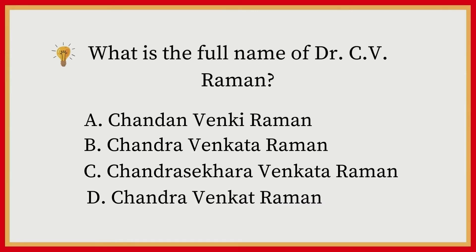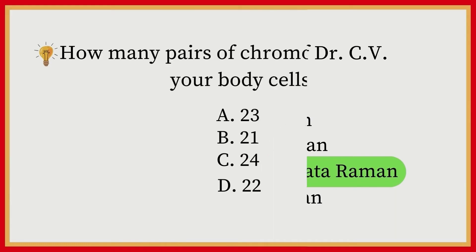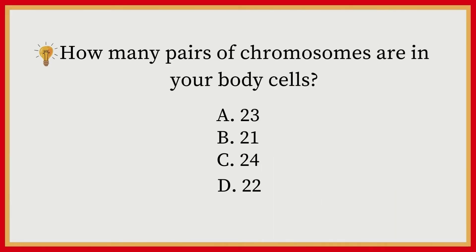What is the full name of Dr. CV Raman? A) Chandan Venki Raman, B) Chandra Venkat Raman, C) Chandra Sakura Venkat Raman, D) Chandra Venkat Raman. Answer: C, Chandra Sakura Venkat Raman. How many pairs of chromosomes are in your body cells? A) 23, B) 21, C) 24, D) 22. Answer: A, 23.